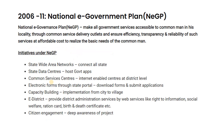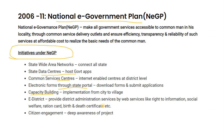From 2006 to 2011, we have the National E-Government Plan — NEGP. Under NEGP, the government introduced initiatives like State Wide Area Networks to connect all states, State Data Centers, Common Service Centers, Electronic Forms through State Portals, and Capacity Building for implementation from city to village. Also included are E-District for district administration services online, Web Services, Right to Information, Social Welfare, and Ration Card services — all online.